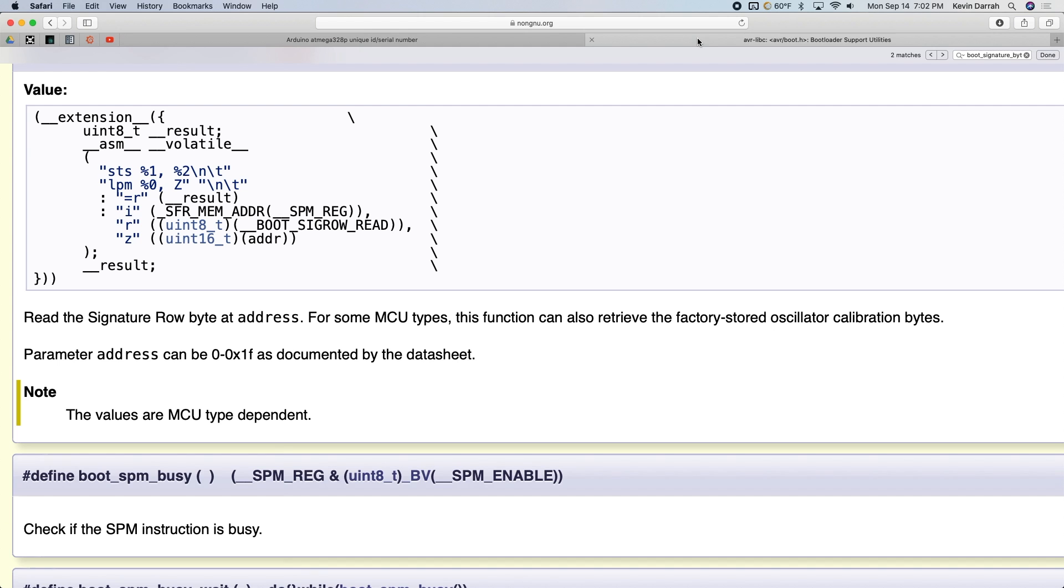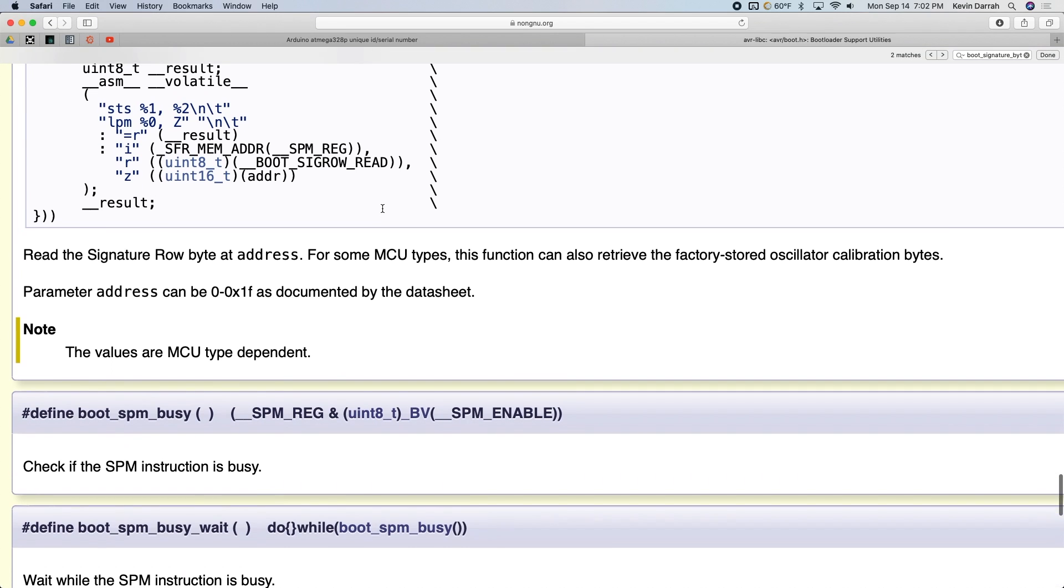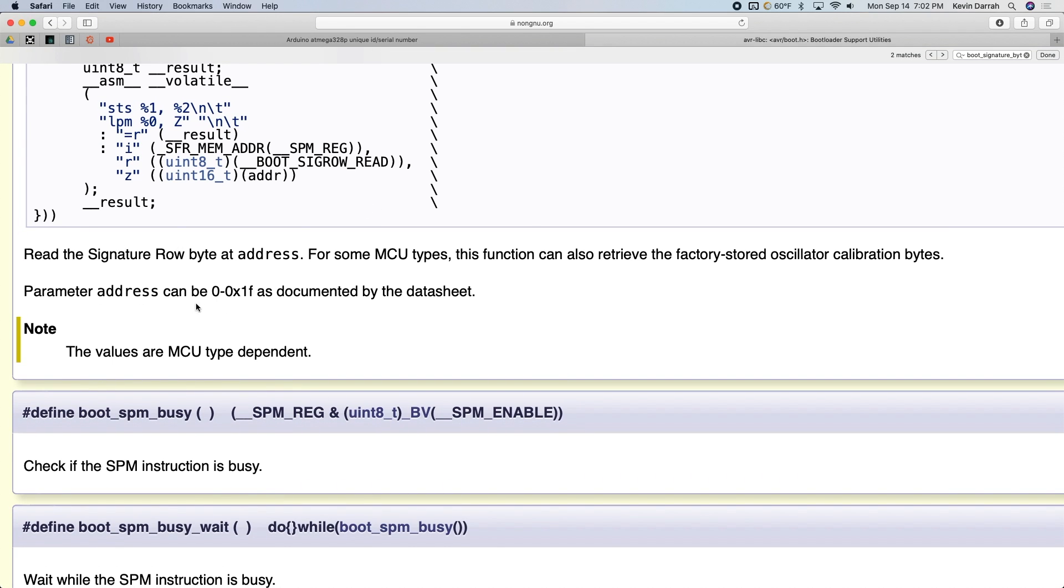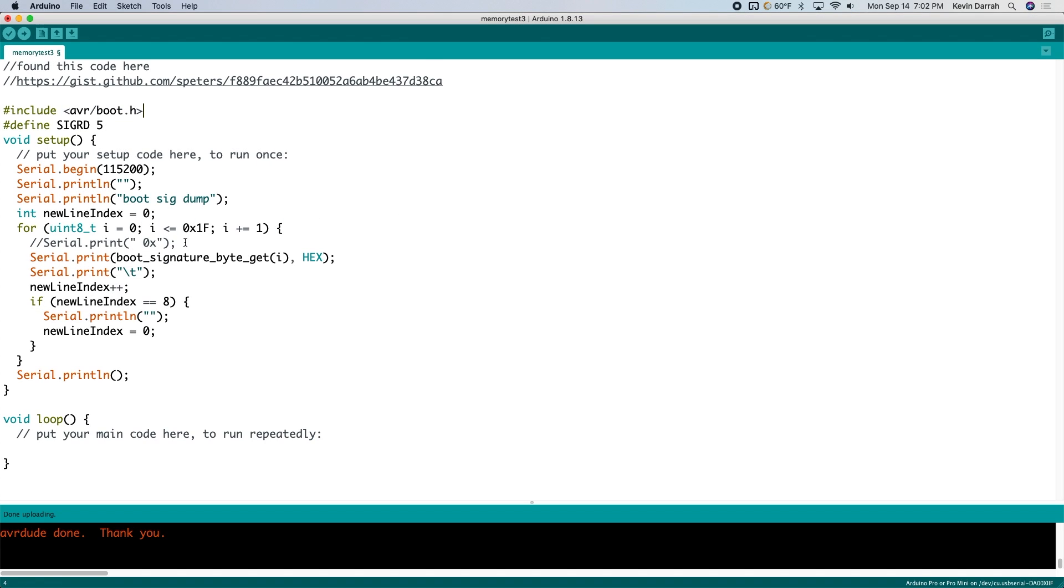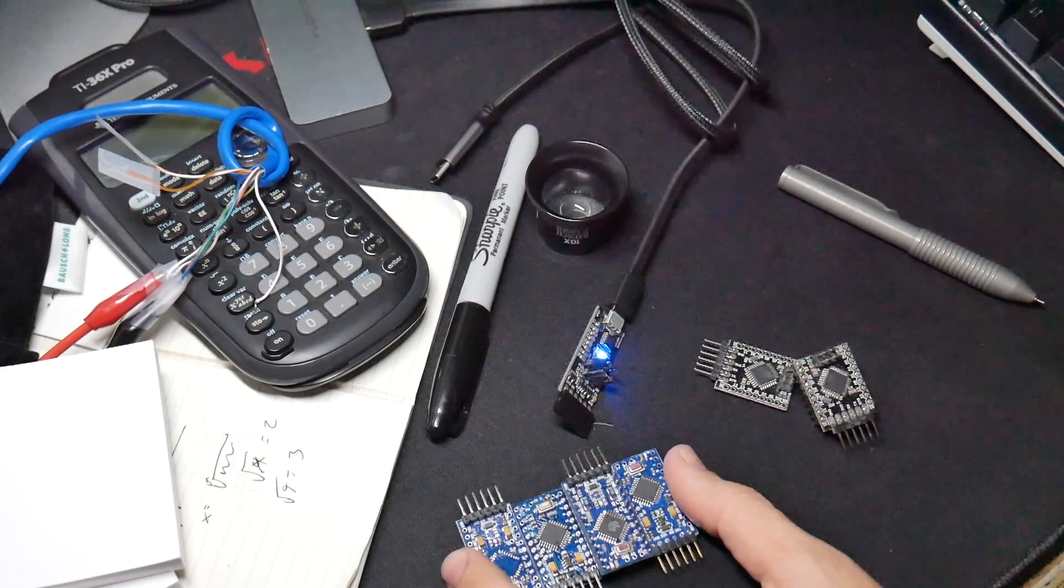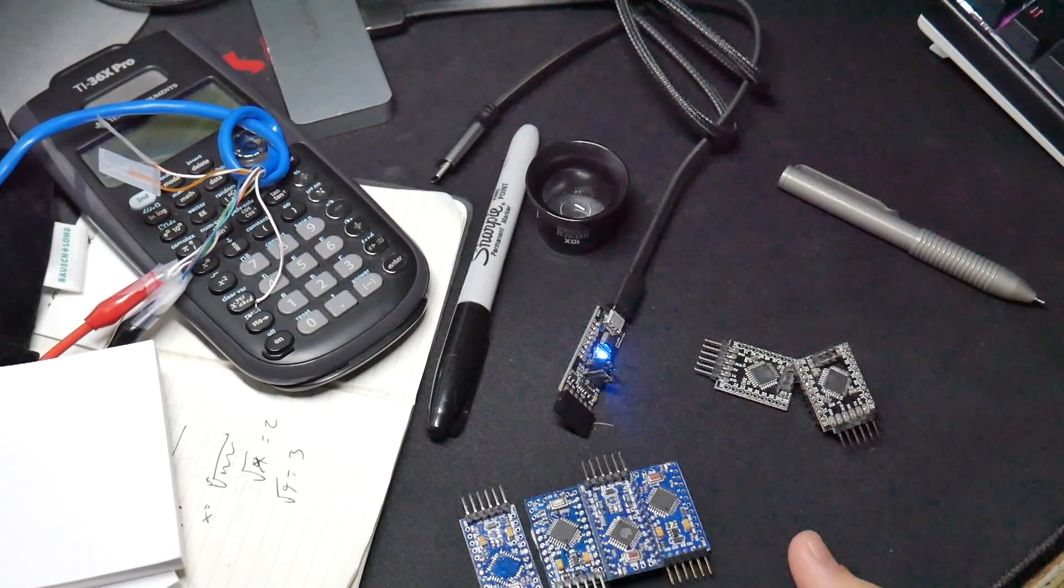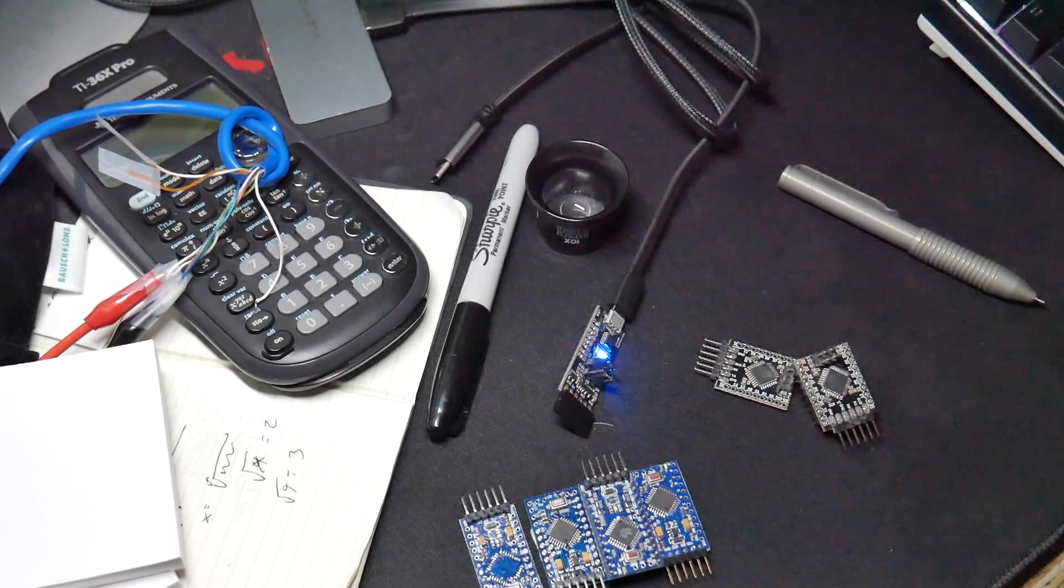And I looked this up here in the documentation, and you see you can read anything from these addresses from zero to hex 1F. So I decided to use that to just read everything out and see what we get. So we'll look at genuine parts as well as the suspiciously counterfeit Pro Minis. And let's see if there's any differences.